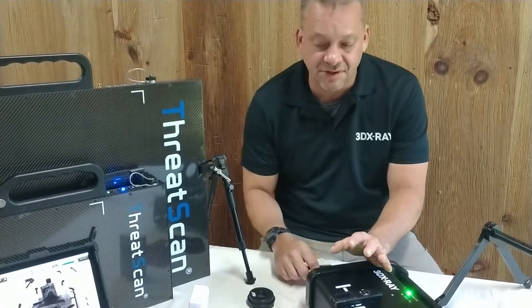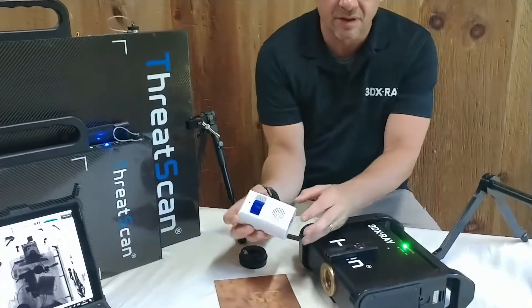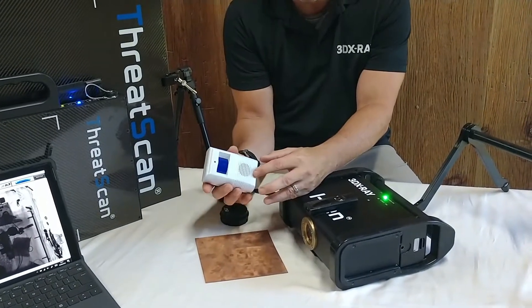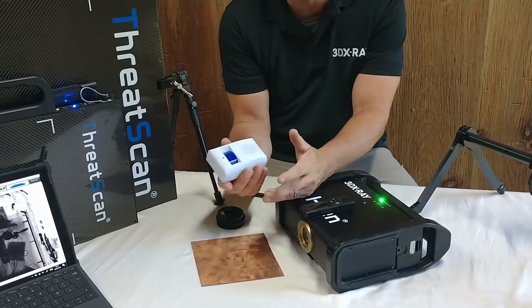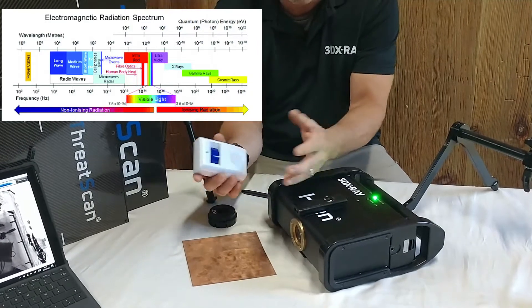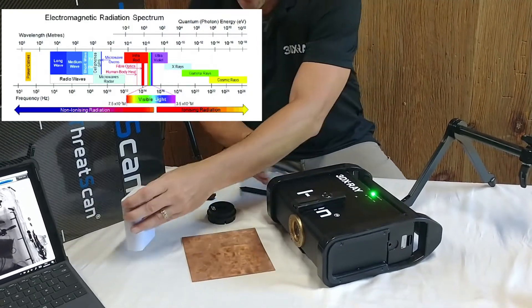We're going to give you a perfect example of an actual counter-IED or IED-type threat where a constant potential generator provides much more capability over a pulse system — and that's an anti-x-ray device. In this example we're going to use what we call a PIR, which is basically a radiation detector; it detects photons — that's all it does.